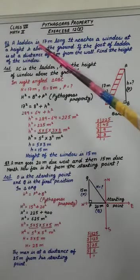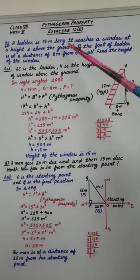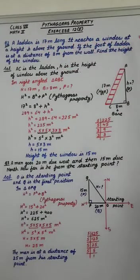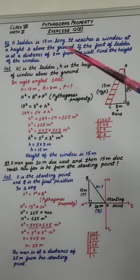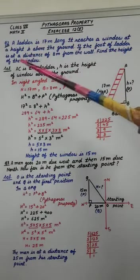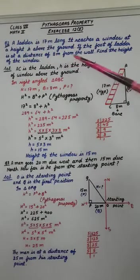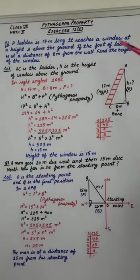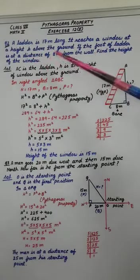Question number two. A ladder is 17 meter long. It reaches a window at a height h above the ground. If the foot of ladder is at a distance of 8 meter from the wall, find the height of the window.